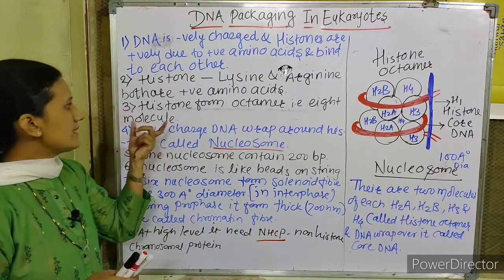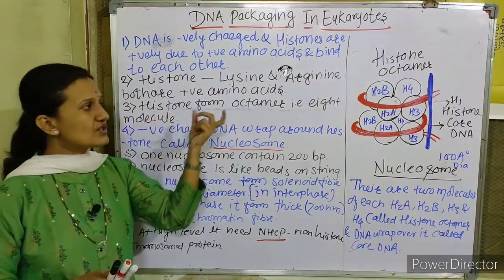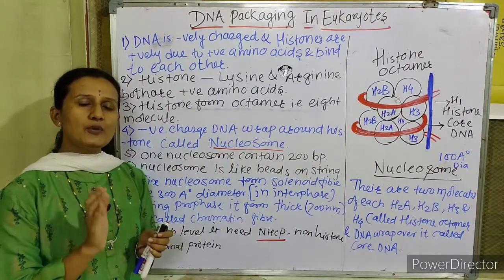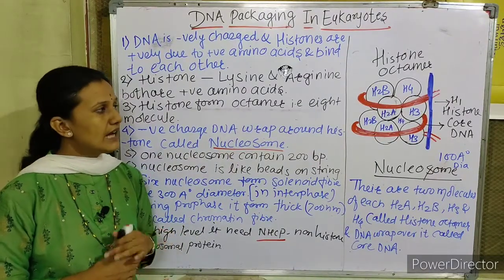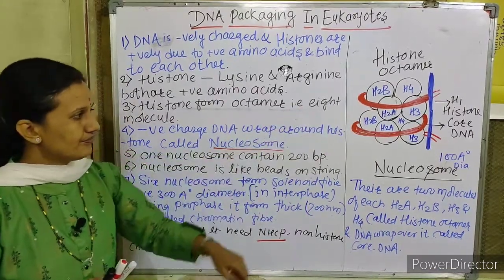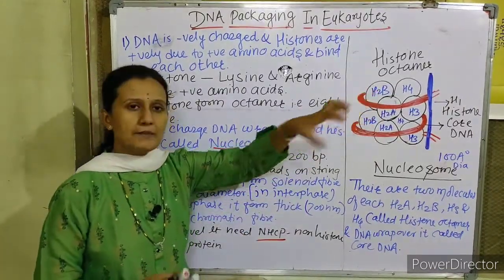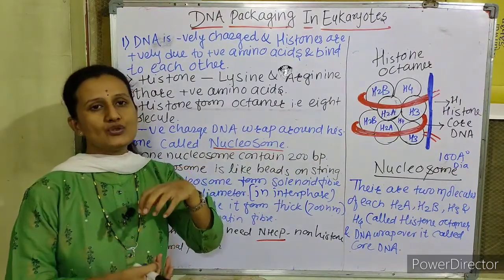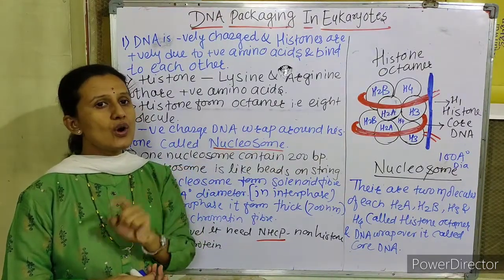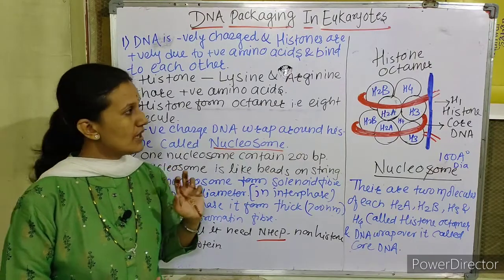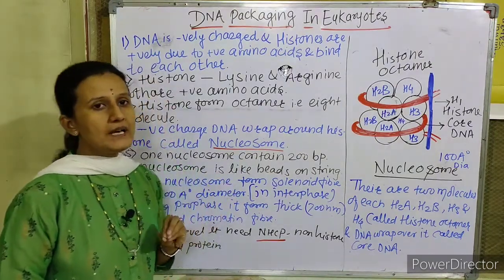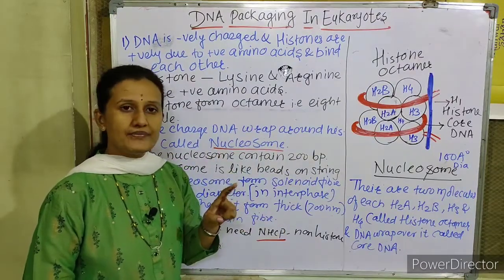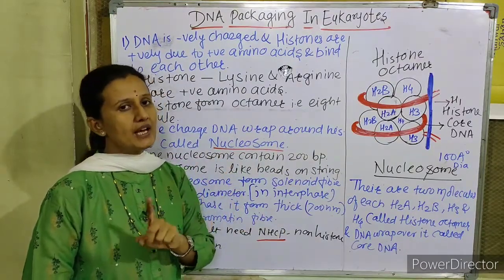Histone forms the octamer. In the DNA packaging, histone has 8 molecules. Four and four histone molecules make the histone octamer — 8 molecules of histone. There are 5 types of histone: H1, H2A, H2B, H3, and H4.